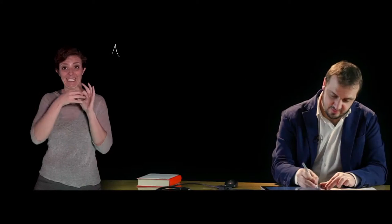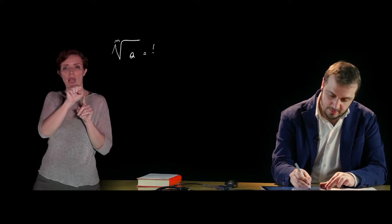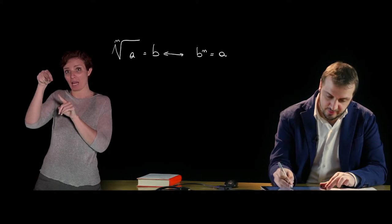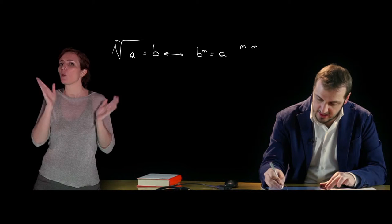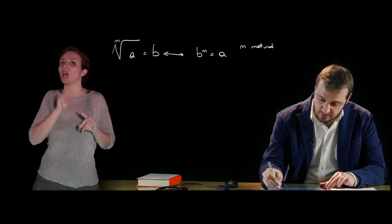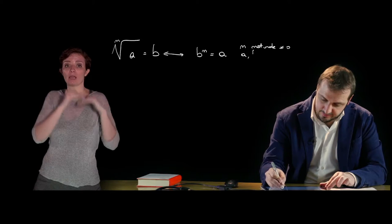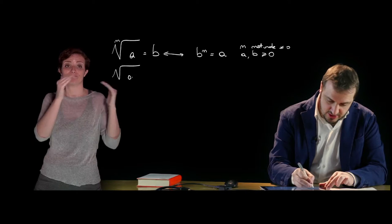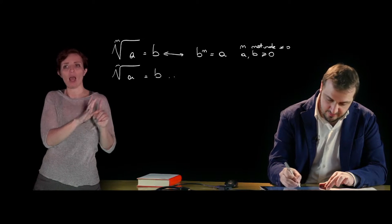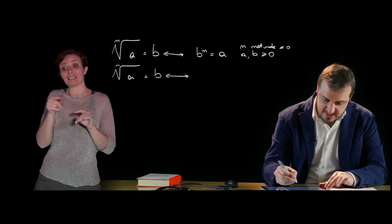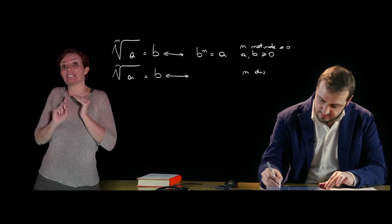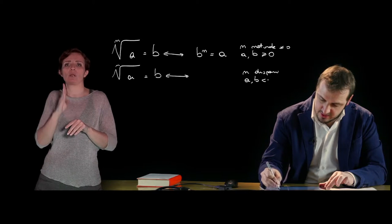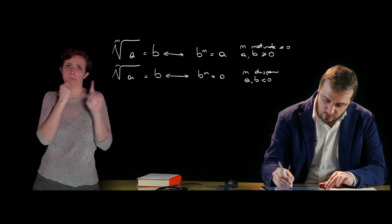Consequently, the nth root of a equals b if and only if b to the power n equals a. This is true for any natural number n different from zero, and for a and b non-negative quantities.